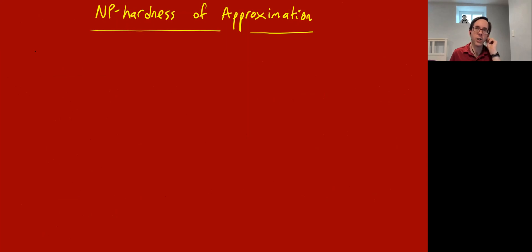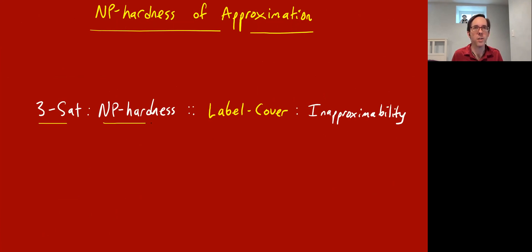The last portion of this lecture, I want to talk about NP-hardness of approximation. I talked about some of this in lecture 20, but I'll recap it. Here's another SAT-style syllogism: 3SAT is to NP-hardness as label cover is to inapproximability. 3SAT is the problem that everybody likes to start from when you prove things are NP-hard. Similarly, if you want to prove things are not just NP-hard but NP-hard to approximate to some factor, the problem that everybody starts from is called label cover.